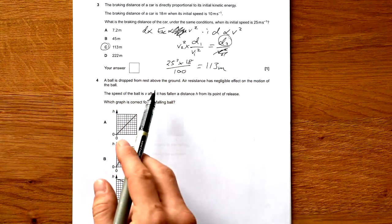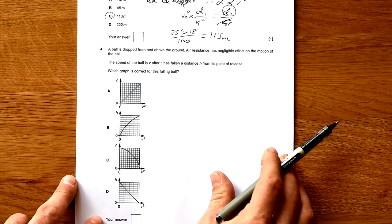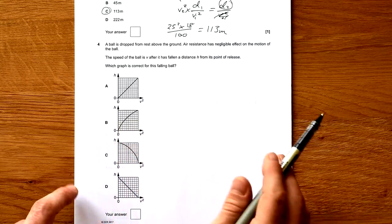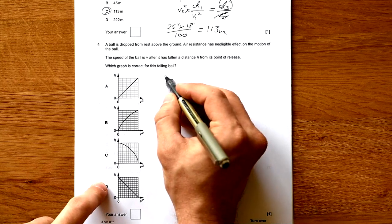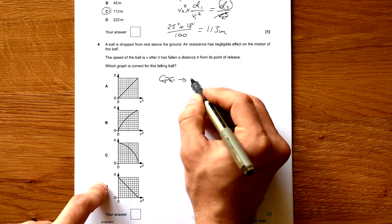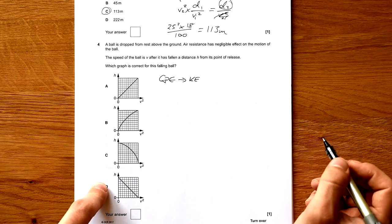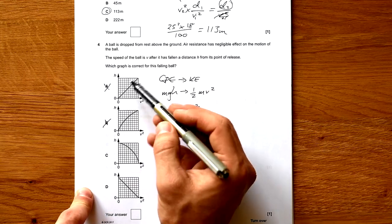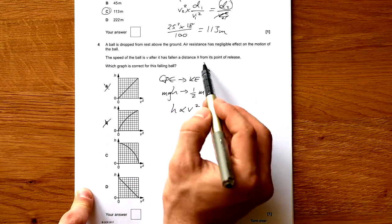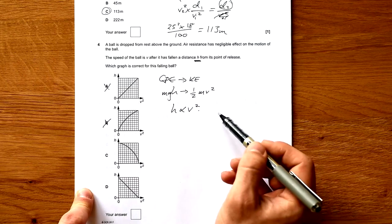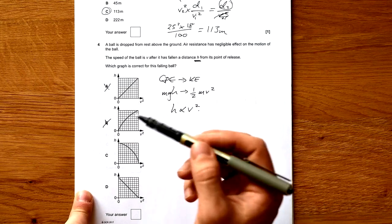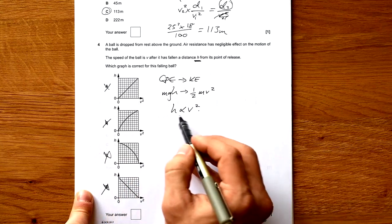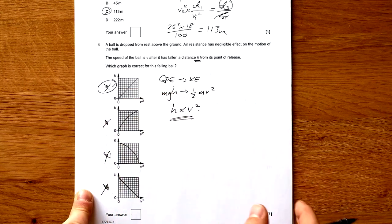Ball is dropped from rest above ground. Air resistance has negligible effect. Which graph is correct for this falling ball? We know that as something falls, GPE turns into kinetic energy. So H is proportional to v squared. They've been cheeky here because H implies height but actually H is the distance fallen from its point of release. So as H gets bigger, v squared is going to get bigger as well. So it's not C, it's not D, and we know that they're proportional so A is the right answer.